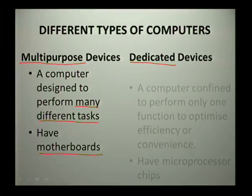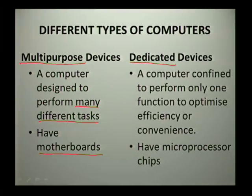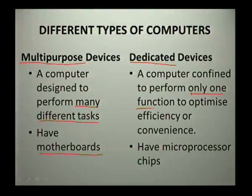The second type is a dedicated device. A dedicated computer is confined to perform only one function so that it can optimize efficiency or convenience. When a computer does many things, one function might suffer — so a dedicated device performs only one function to be more efficient and convenient. Most of those would have a microprocessor chip. For example, think of your microwave, and for multi-purpose, think of your PC at home.